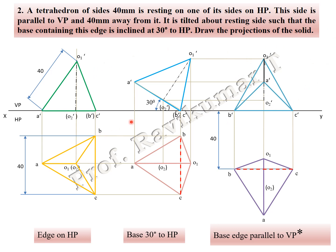In the second problem the base is inclined, whereas in the previous problem the edge containing the corner is inclined. These two are very, very important. Both types of tetrahedron problems regularly appear in examinations. Please be careful: usually you will construct the top view correctly but make a mistake in the front view by not taking the 40 mm true length from corner A only. You must take the true length from the corner side only — cut an arc, then join. That is the tetrahedron. Thank you.